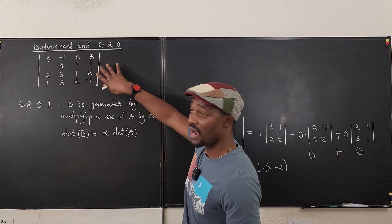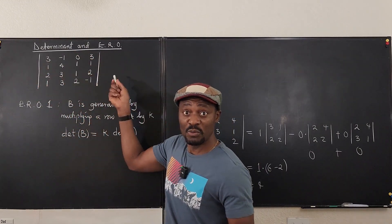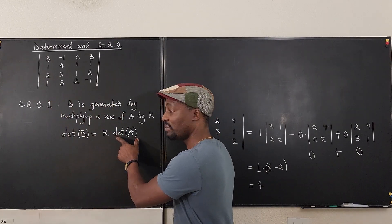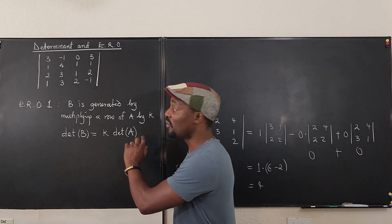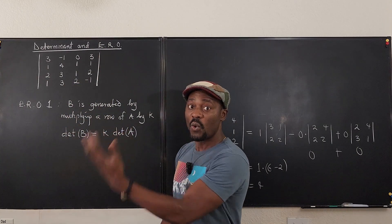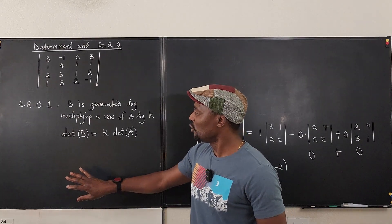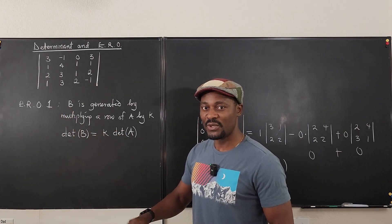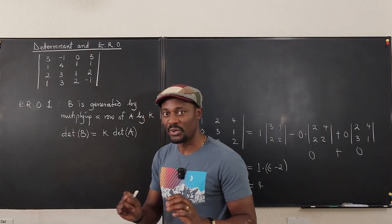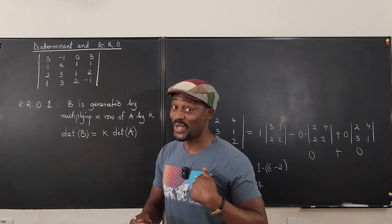That's why I recommend you don't perform scalar multiplication of a row when you're computing determinants, unless you're adding that multiple to another row. Performing a scalar row operation changes the determinant and requires you to compensate, which complicates things unnecessarily.